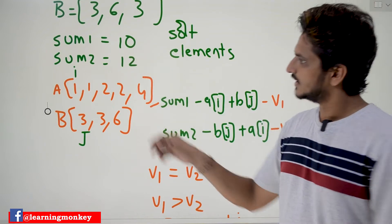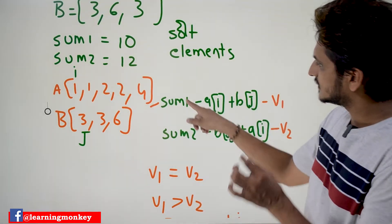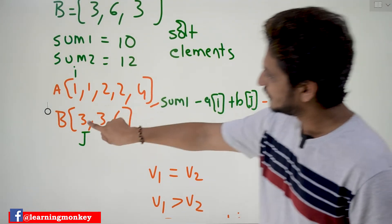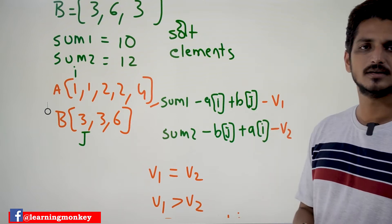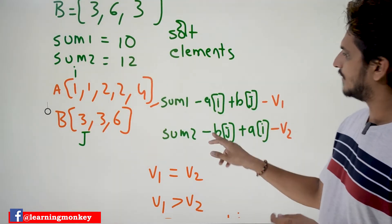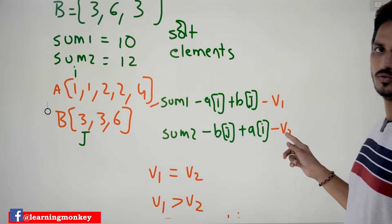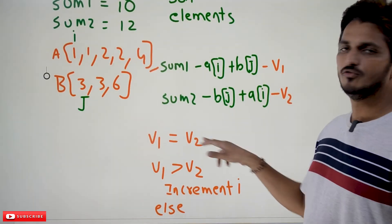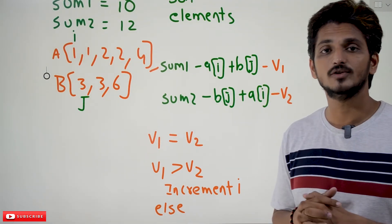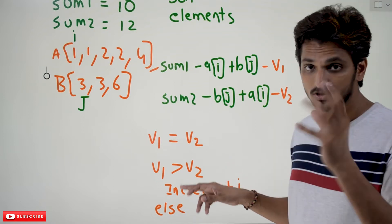We start from here. We take variable i for the first array and variable j for the second. Sum1 minus the i-th element of A (A[i]), plus the j-th element of B (B[j]) — we call that summation V1. Similarly, sum2 minus B[j] plus A[i] is V2. If V1 is equal to V2, there exists a valid element pair; by changing those elements, our summation value is the same. Then immediately if V1 is equal to V2, return 1.